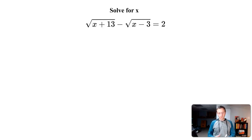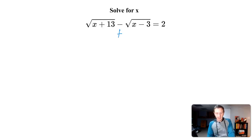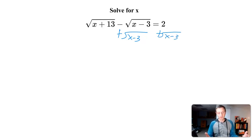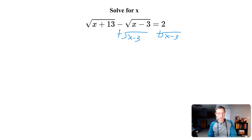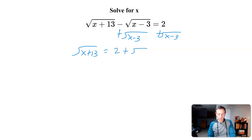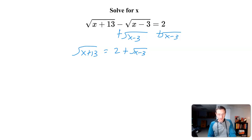I don't think squaring immediately is going to be the cleanest way, so my first step is to get a radical by itself. That means I'm going to add the square root of x minus 3 to both sides. I'll be left with the square root of x plus 13 on the left side, and on the right side I'll have 2 plus the square root of x minus 3. Now that I've moved the radical over, I can square, because I have a radical by itself — at least I'm getting rid of one radical.